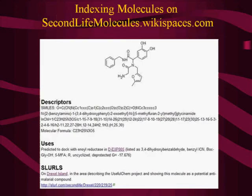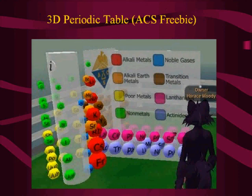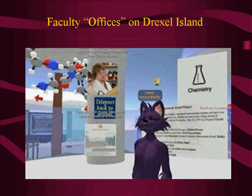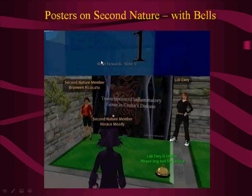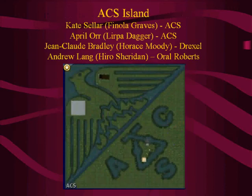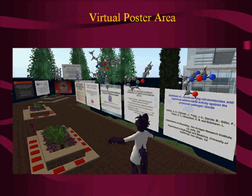We started working with the ACS, which actually sponsored a lot of what we're talking about today. One thing they sponsored was a three-dimensional periodic table that you can get for free and use in your classes — you can click on each atom and get information about it. I've also set up Drexel Island with office spaces and lab spaces for students. We can also run conferences. I'll be giving another talk at 4:25 this afternoon on how to use networking in Second Life — how to meet people, get jobs, and so on. At the last meeting we had 20 posters from the symposium on ACS Island.